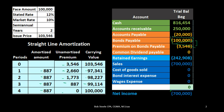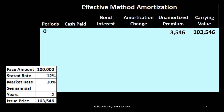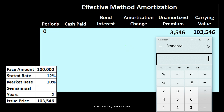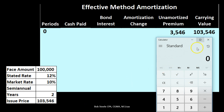The problem with the straight-line method is that the expense isn't fully in accordance with the matching principle — we should use some kind of effective method that changes the allocated amount based on the carrying amount of the bond. The effective method is the preferred method, though a bit more complicated. The difference between the two methods might not be material. Starting with the effective method: the unamortized premium is $103,546 minus $100,000 equals $3,546, and the carrying amount is $100,000 plus $3,546 equals $103,546.